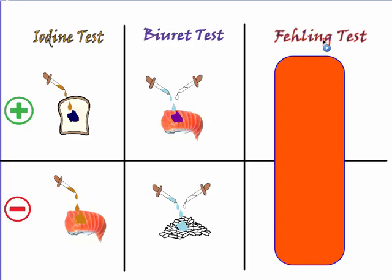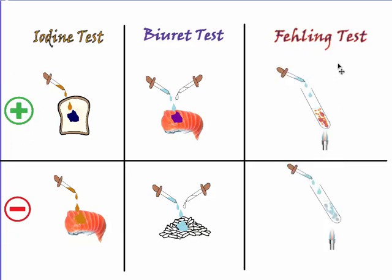The Fehling test is used to detect the presence of reducing sugar. It is different from other tests because the setup must be heated, otherwise it will not give a result. The Fehling solution is blue. If the result is positive, we see a brick-red precipitate — small brick-red dots — indicating the food contains reducing sugar. If the blue color remains blue even after heating, the food does not contain reducing sugar.